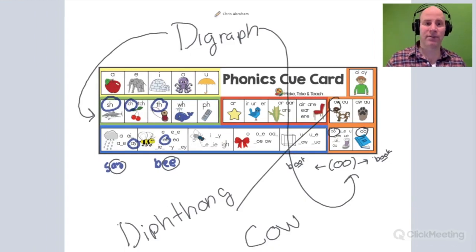Where a digraph, like SH, now touch your jaw, your tongue, SH, it doesn't move.